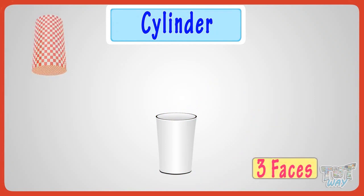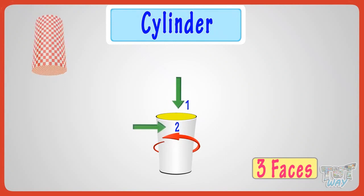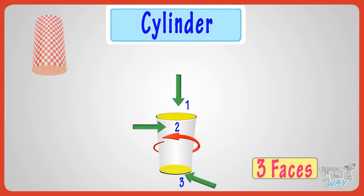It has three faces. One face is round-shaped on the top. Second one is the curved surface that wraps around it. Third one is also the round-shaped face on the other side of the curved surface. Can you see that?